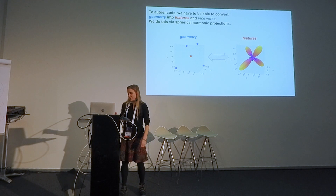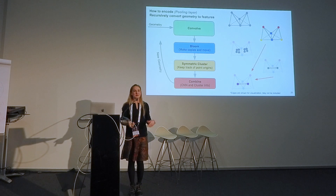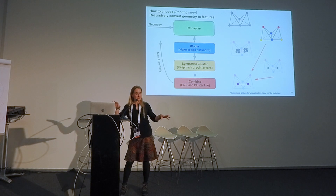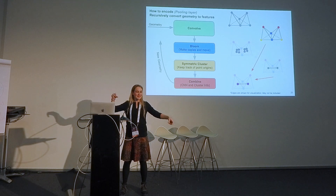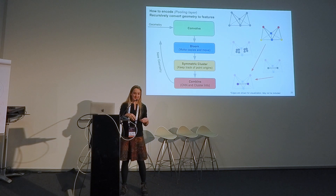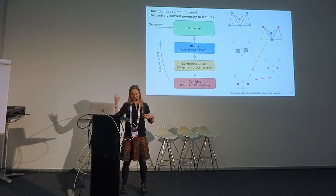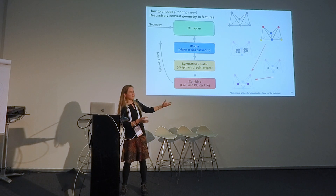This is how the autoencoder goes between geometry and features. We have two types of layers: a pooling layer, which converts geometry into features. First we have our geometry, we convolve and look around to see what's going on. Each atom clones itself according to some spherical harmonic signal it produces — you put points on the peaks of that signal and cluster those points, enabling a learnable clustering. We use a symmetric clustering algorithm, like k-means but with symmetry. Once we have clusters, we do a convolution-like operation gathering features onto new points. You can iteratively reduce features at different levels.